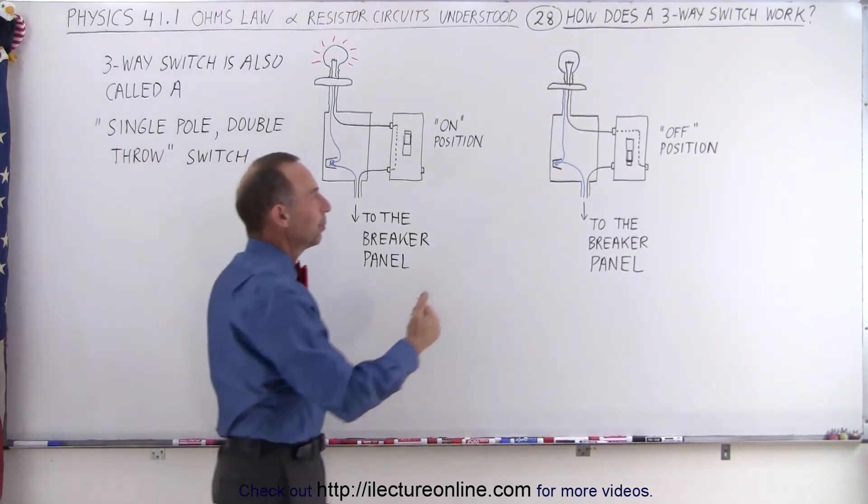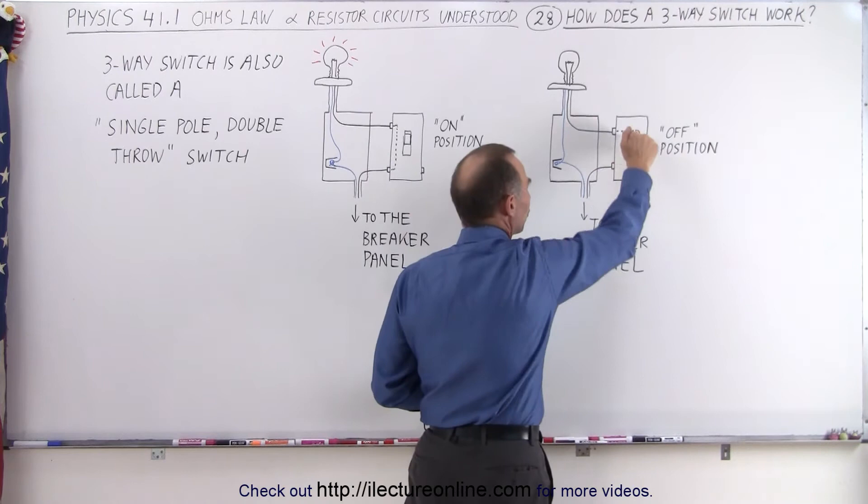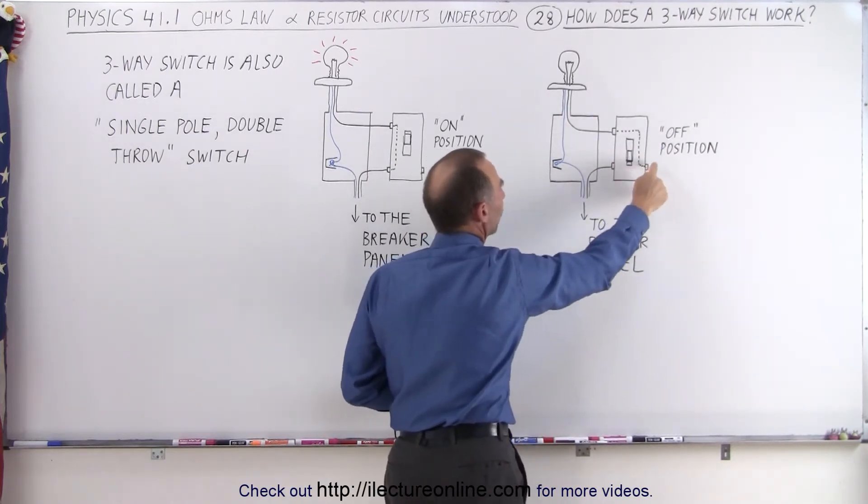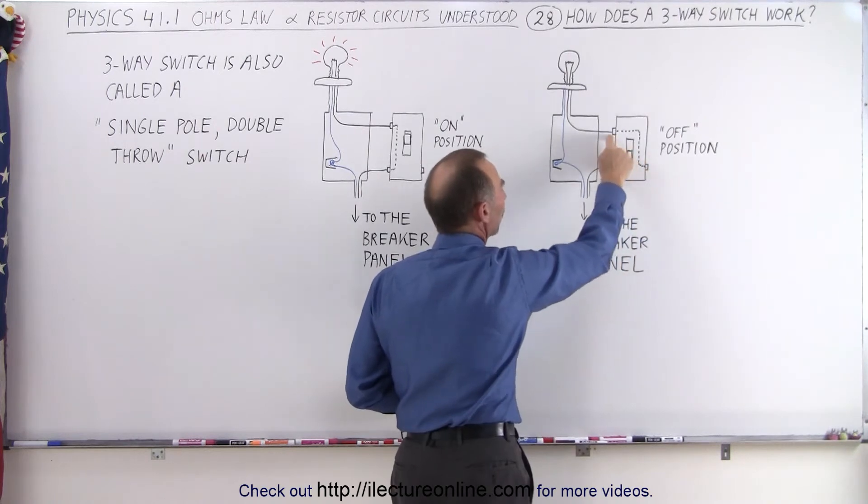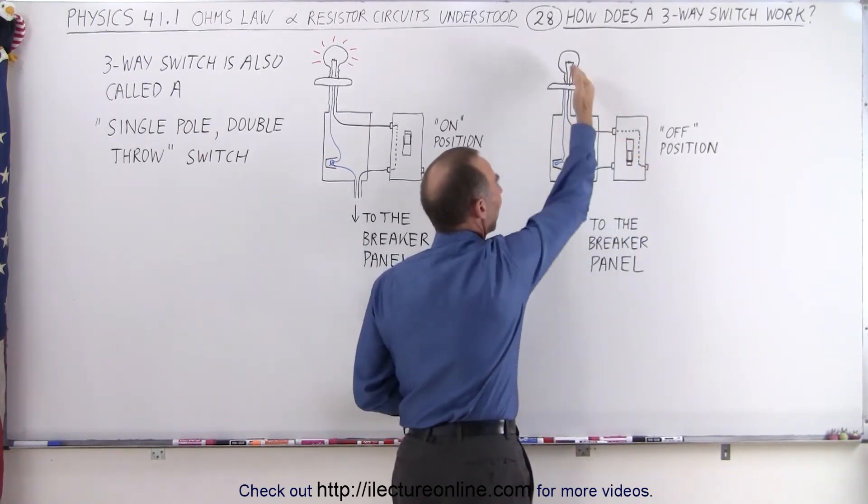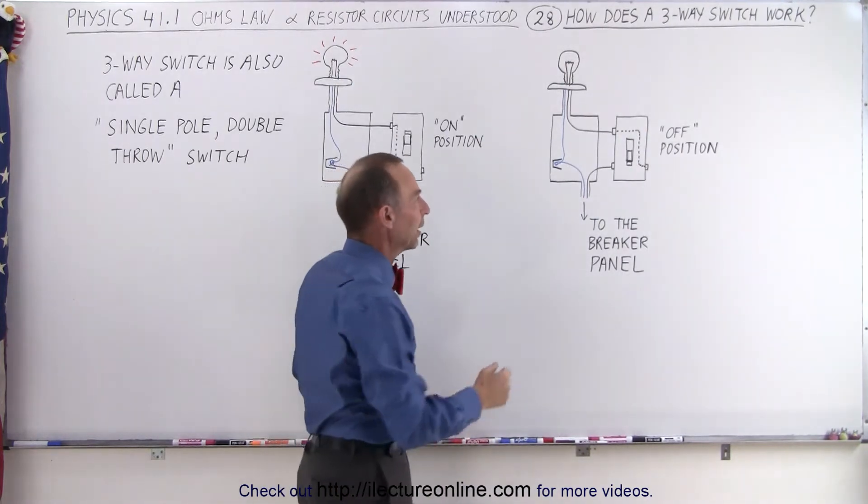Now the same switch, when you turn it into the off position, you push the lever downward, then the connection goes from the right connection here to up here, and so if your wires are connected this way, there's no continuous path, and the light bulb will not light. You basically turn it off that way.